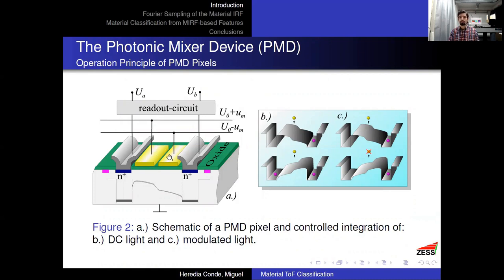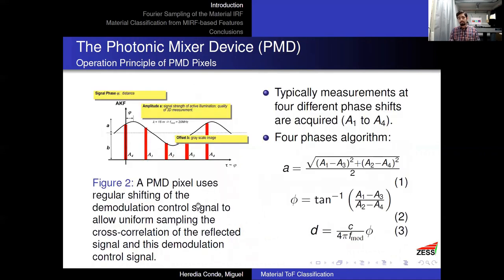Conceptually, the PMD pixel has two transparent photo gates on top, isolated from the substrate by silicon oxide. A difference of potential generates a gradient in the substrate so that photo-generated carriers are pushed or pulled towards one integration well or the other — that is the demodulation capability. By changing the phase shift between the modulation and demodulation signals, we acquire samples of the cross-correlation function between what is received and what was emitted. Typically we perform four phase shifts, acquiring four samples, and applying the four-phases algorithm to retrieve amplitude and phase shift, from which depth is obtained.